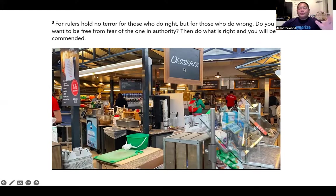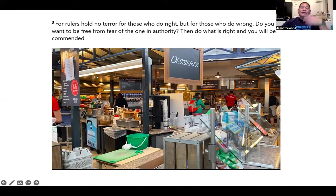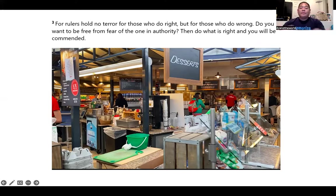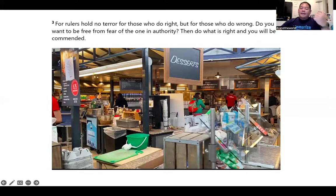I imagine a server asking 'do you want to be free?' 'The one' is Jet Li because he did the movie The One. 'Authority' is a police officer. The barista is saying 'do you want to be free from fear of the one in authority?' Then there's a hen for 'then,' and the hen does the right thing and is commended. 'Then do what is right and you will be commended.'